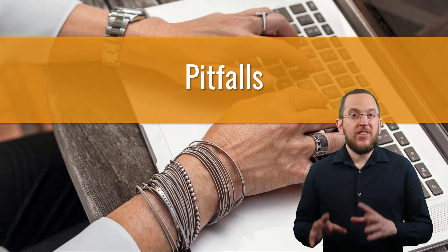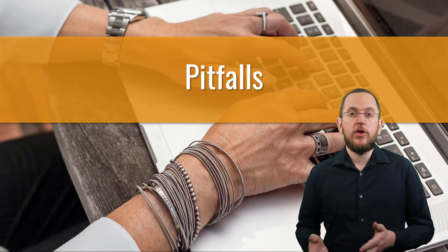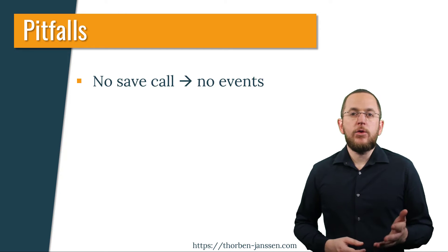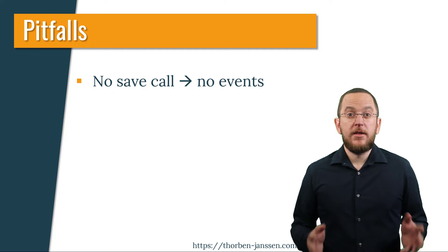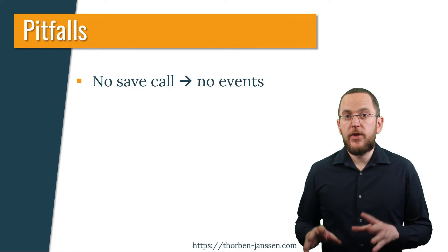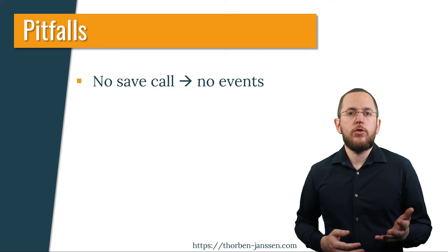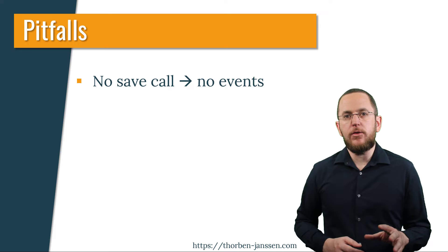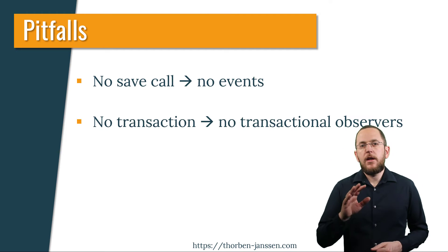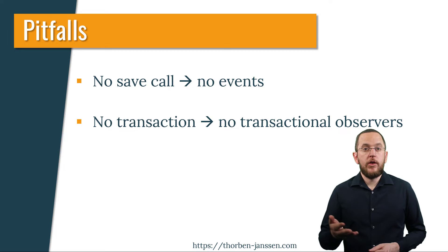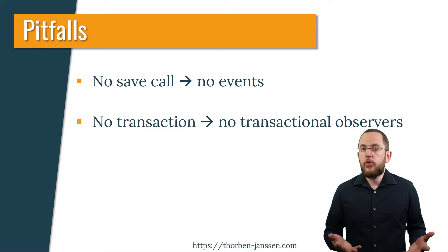As simple as working with domain events might seem, several pitfalls can cause Spring not to publish an event, not to call an observer, or not to persist the changes performed by the observer. Spring Data JPA only publishes the domain events of an entity if you call the save or saveAll method on its repository. But if you're working with a managed entity — which usually is every entity object you fetch from the database during the current transaction — you don't need to call any repository method to persist your changes; your persistence provider, for example Hibernate, detects the change automatically. Spring only calls the transactional observers if you commit or rollback a transaction. If your business code publishes an event without an active transaction, Spring will not call these observers.